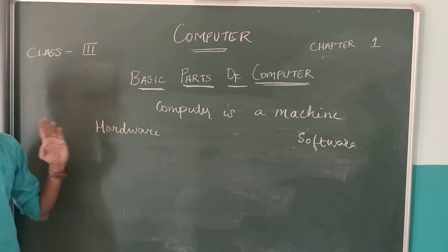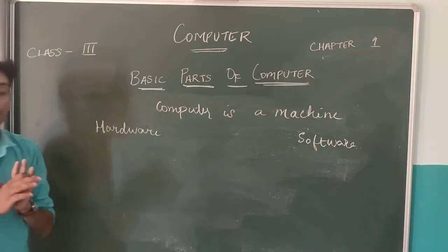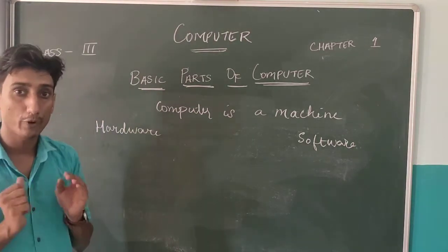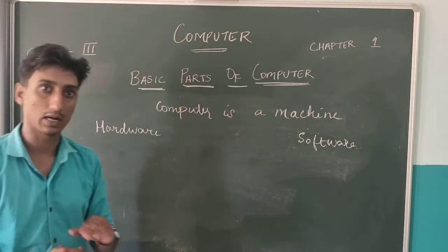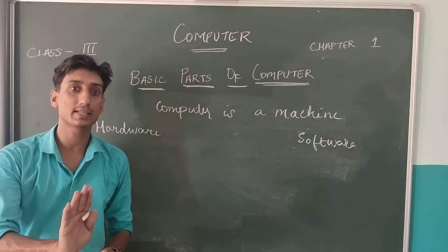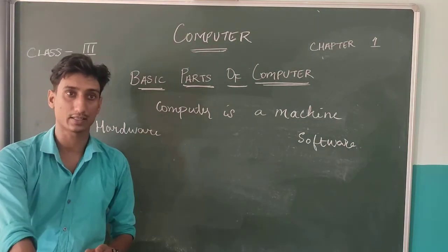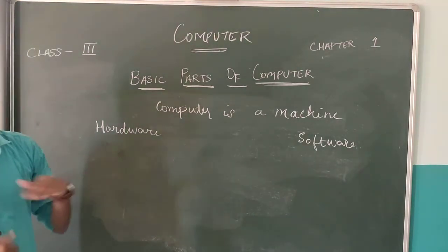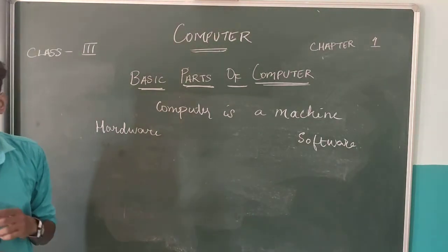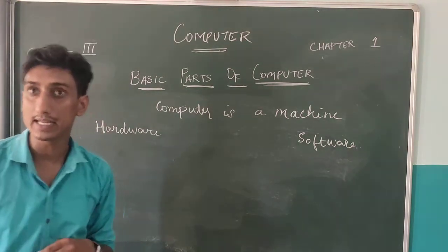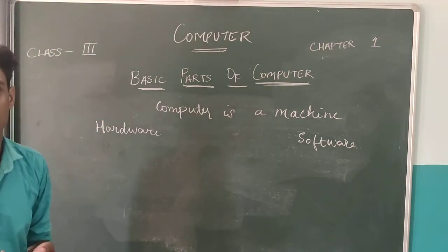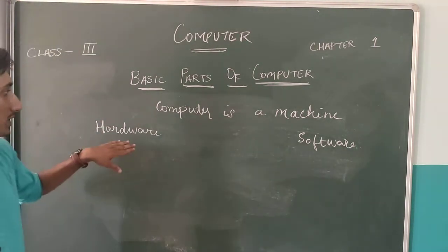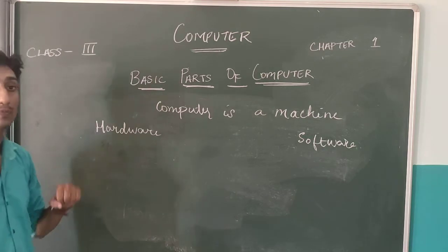Hardware. The parts of the computer you can see physically and touch are called hardware. Those are hardware — the physical parts of computer that can be seen and touched.